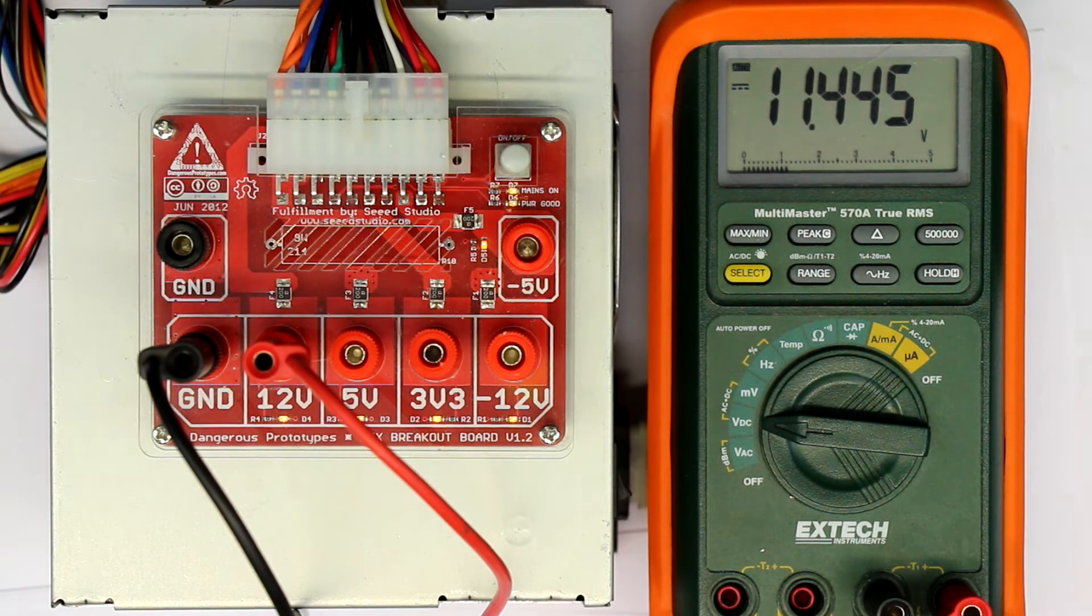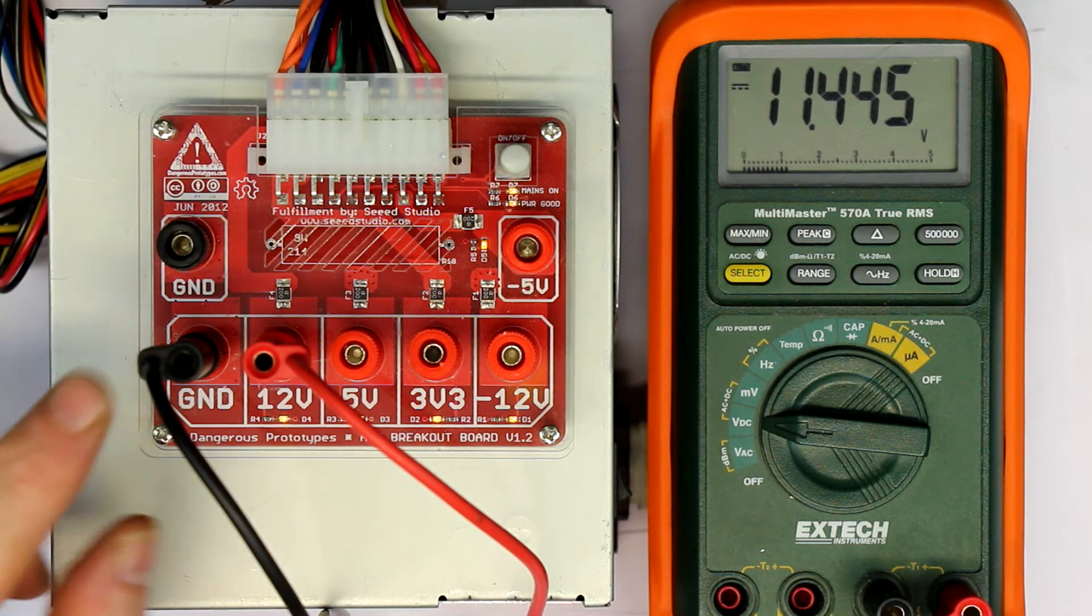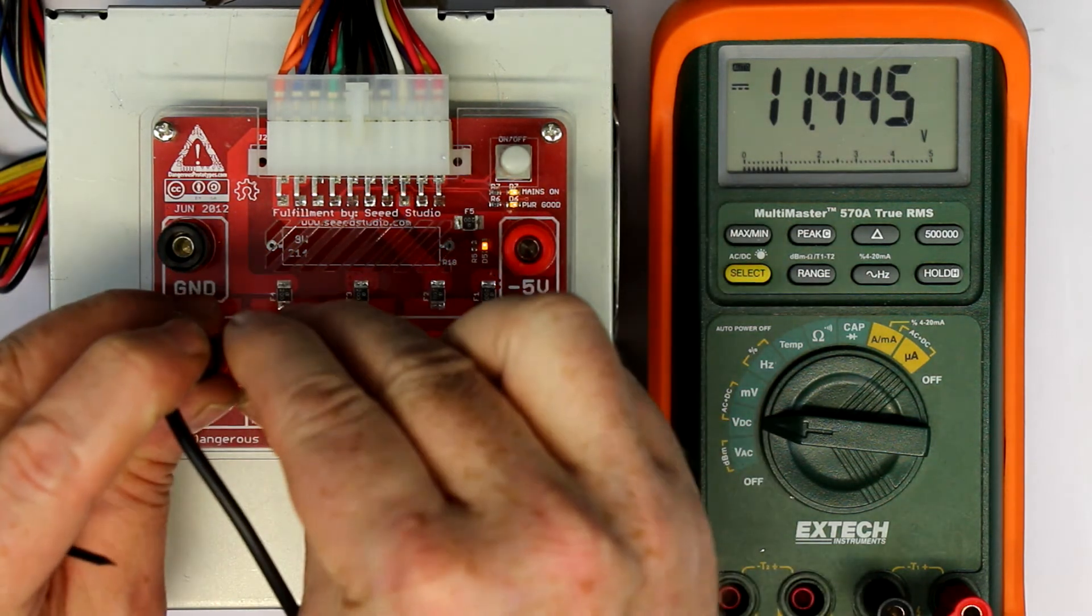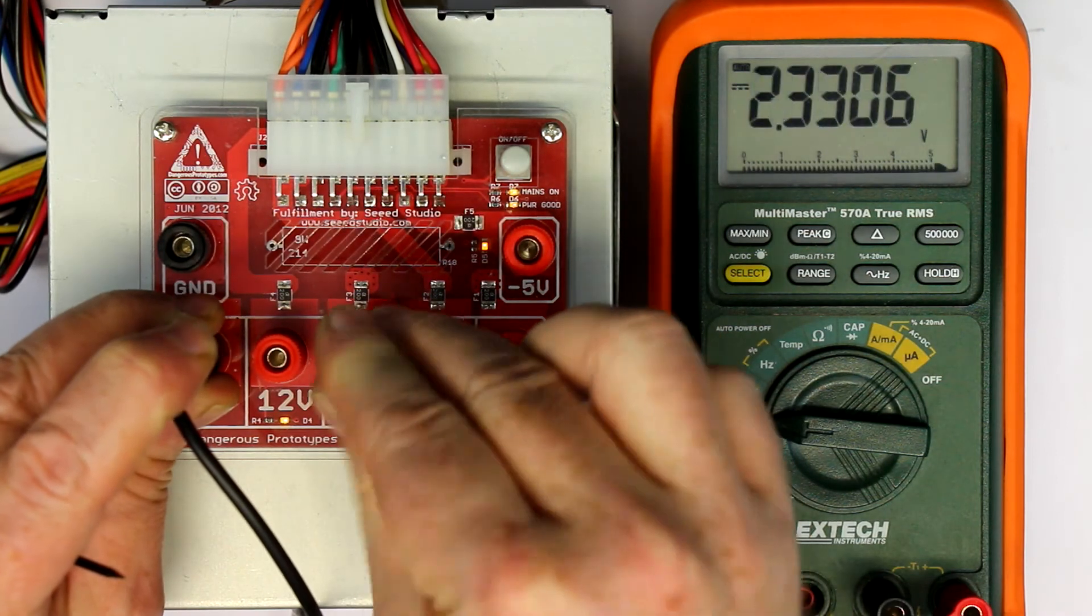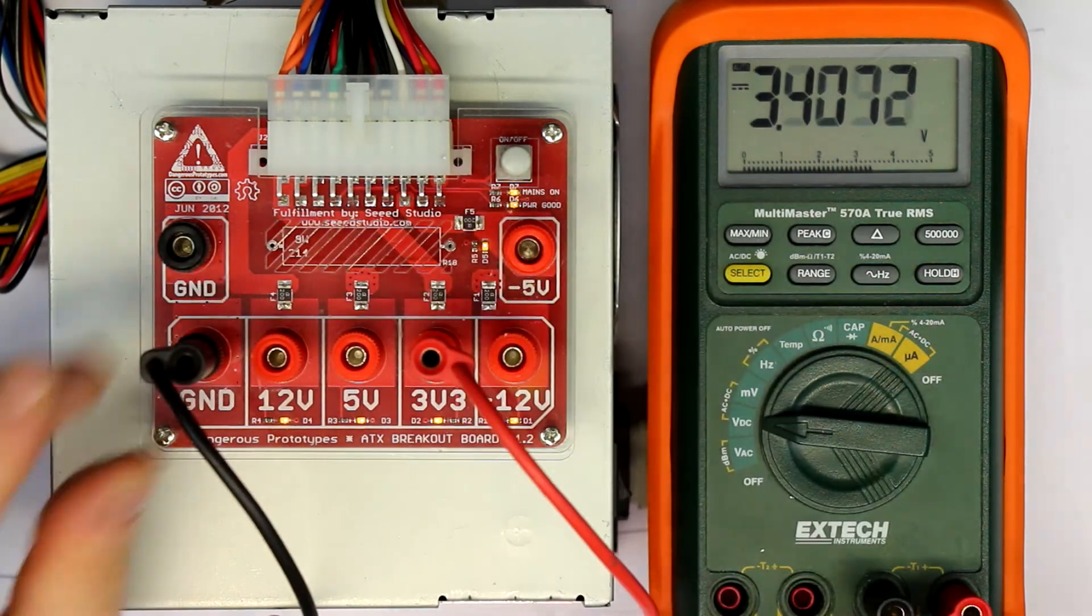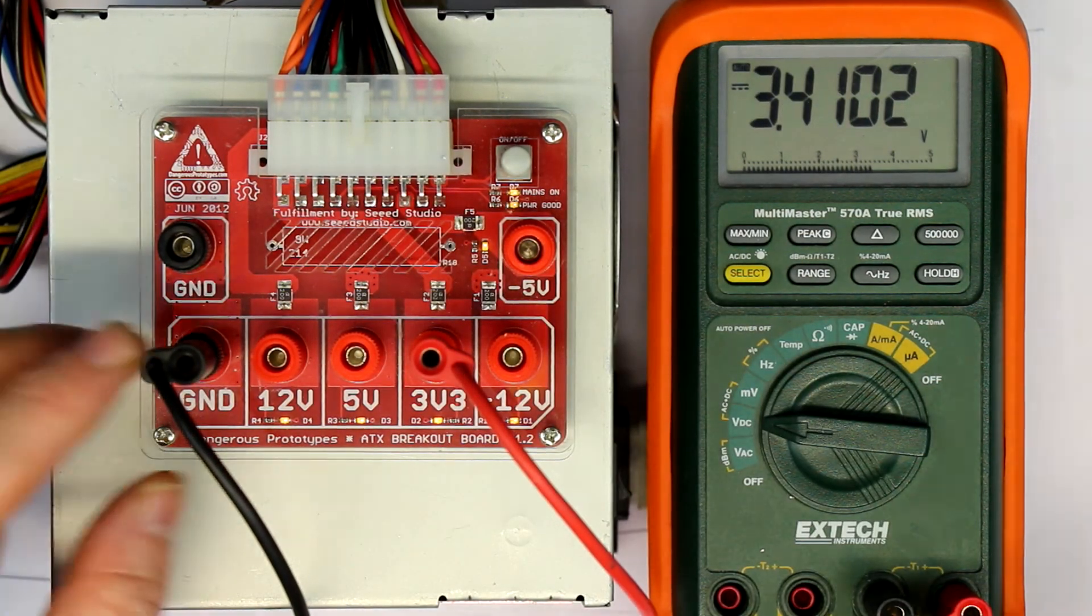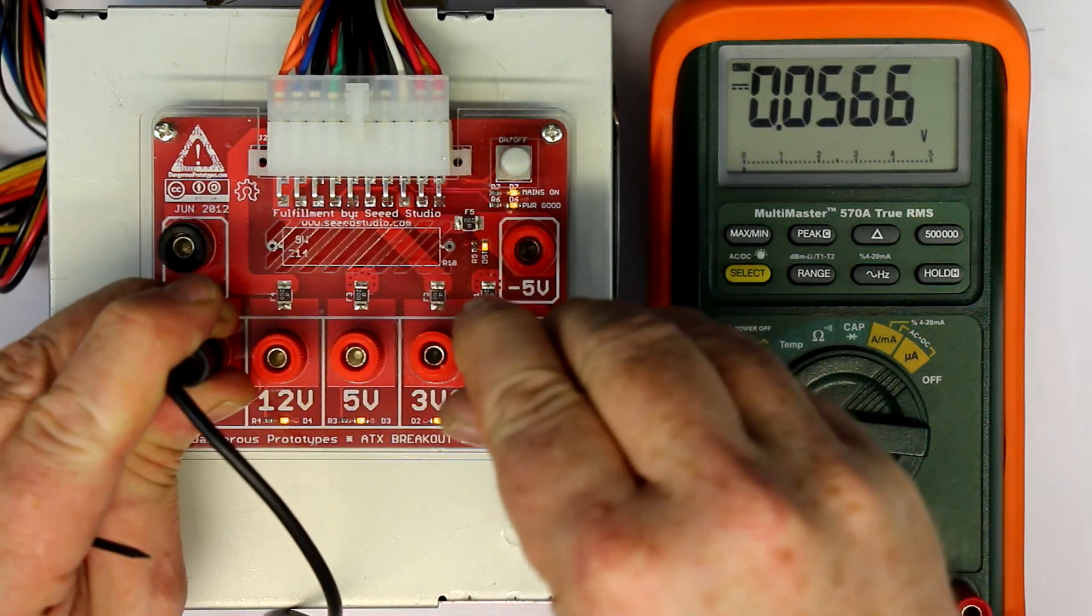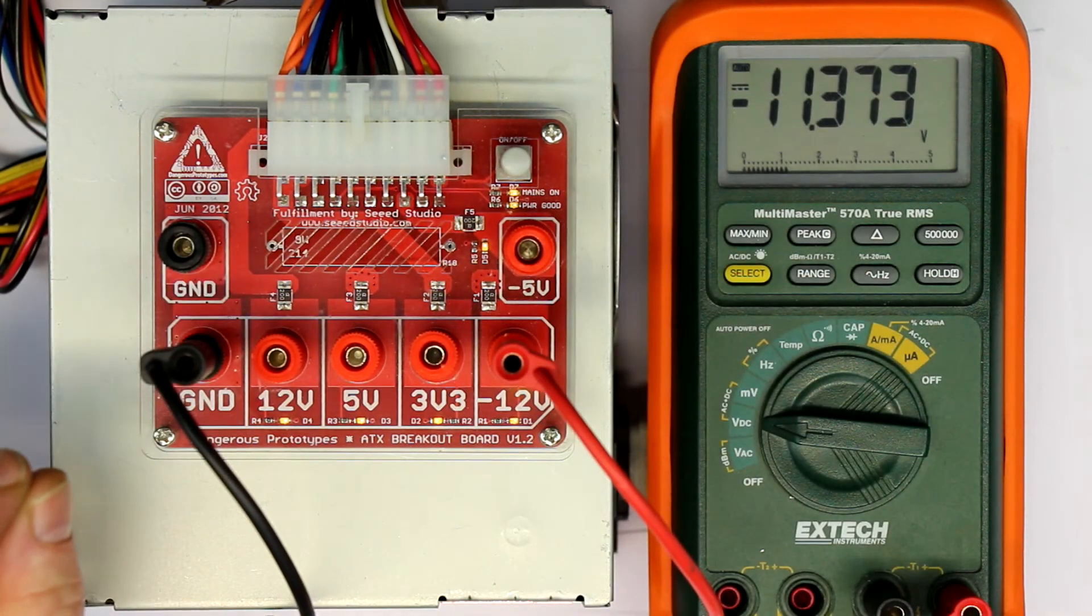So let's check here what voltages we do have here. We have the 12V rail, we have the plus 5V rail, we have a 3.3V rail, a minus 12V rail.